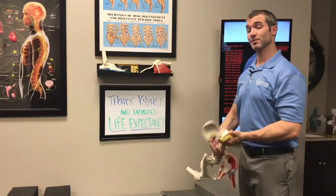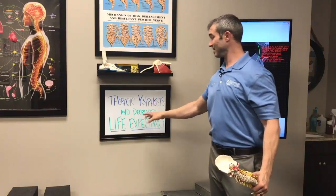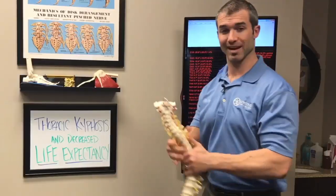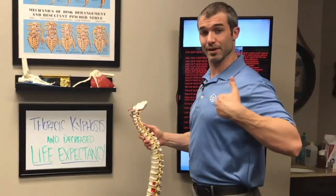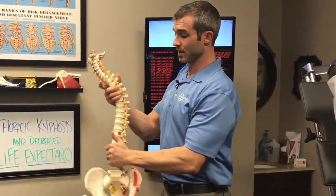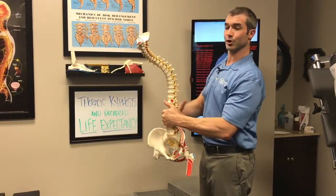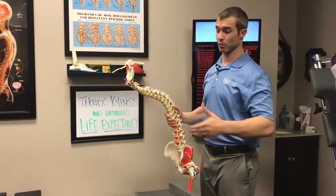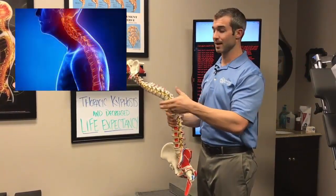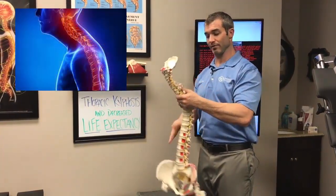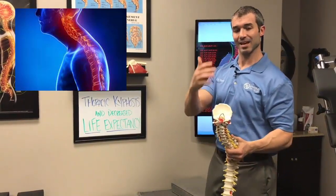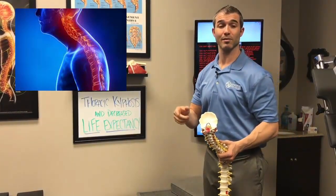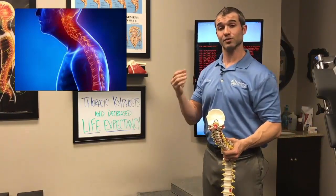In this brief video we want to talk about something really important: thoracic kyphosis and decreased life expectancy. The thoracic spine is the mid-back area. Technically, kyphosis just means the backward curve in the mid-back — that's a normal curve. Hyper-kyphosis is when there's too much curve in the mid-back. This is the one area of the spine that has been researched more than any other part in reference to predicting health outcomes and even life expectancy.